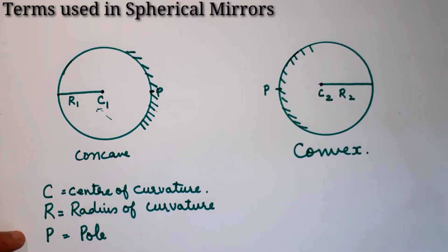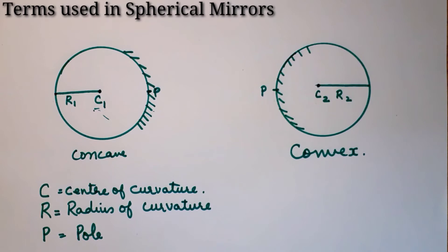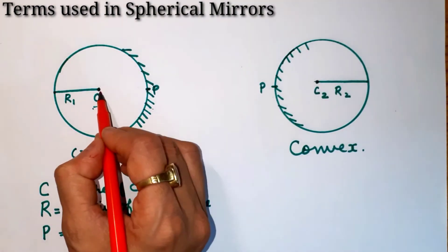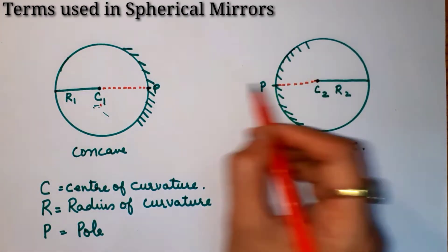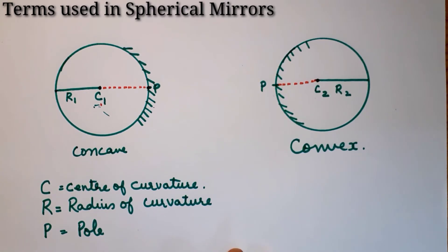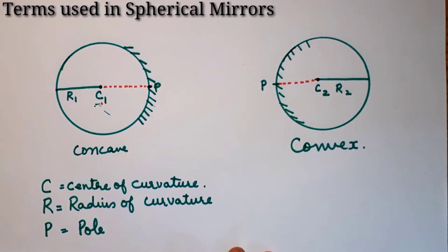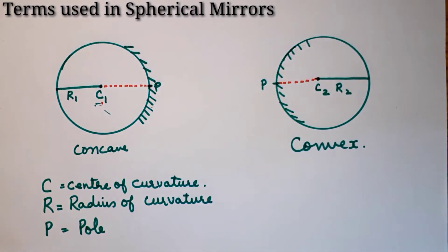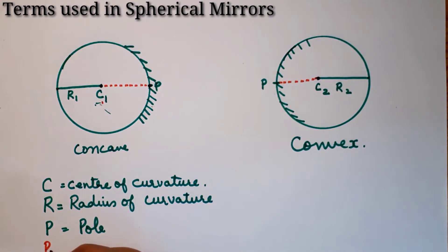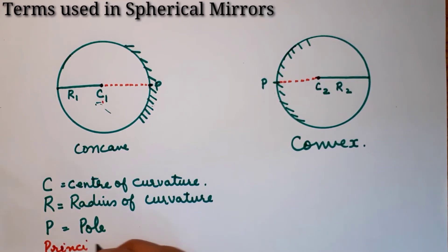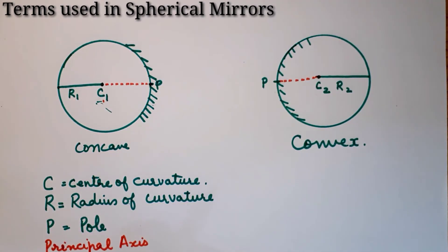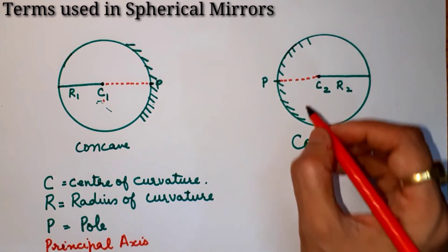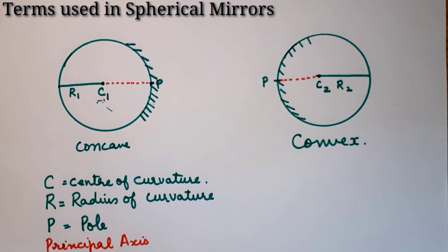Now when we talk about the principal axis — the line which joins the center of curvature and the pole is said to be the principal axis. So the principal axis of a spherical mirror is that line which joins the center of curvature to the pole. This red line joining the center of curvature to the pole is the principal axis, and the same applies to the convex mirror.